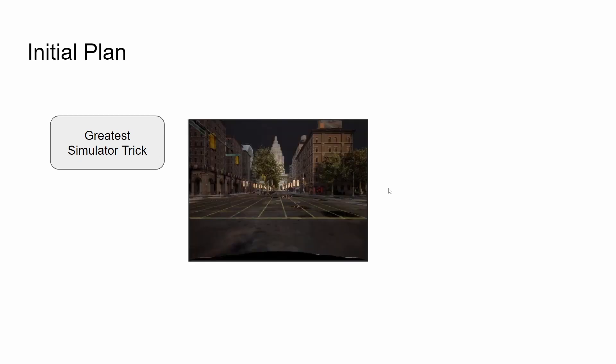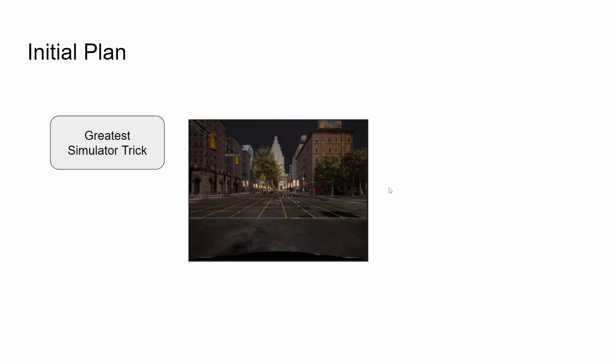My initial plan was to use the simulator's greatest trick that you've seen me showing in the latest video, which goes from this to this out of the box in the simulator. So you get a real image from a front-facing camera of the car and then you get automatically everything segmented into different object types. You see drivable surface in this color, you see lane markings, non-drivable curb edges, traffic lights, cars, you name it, which is great.